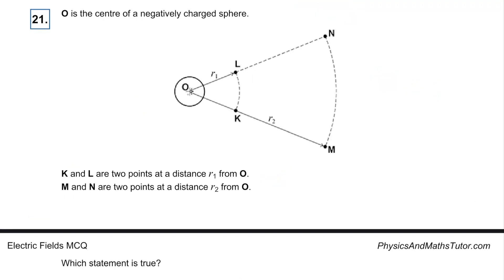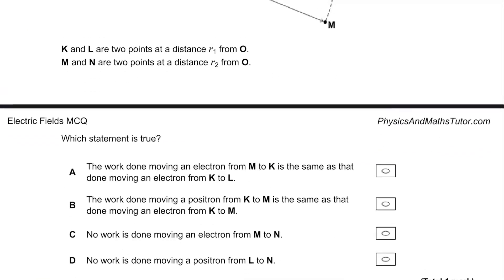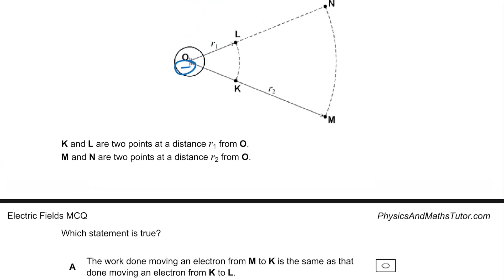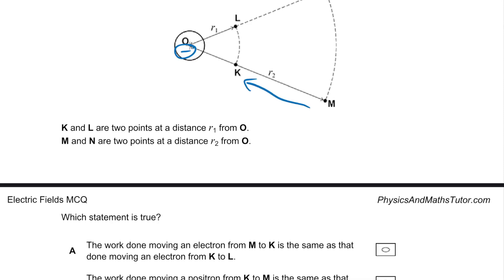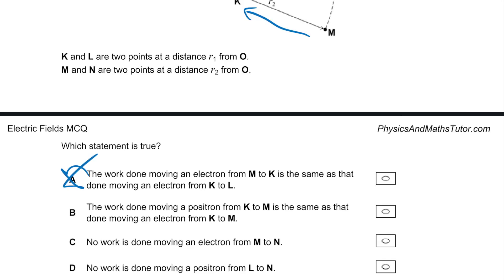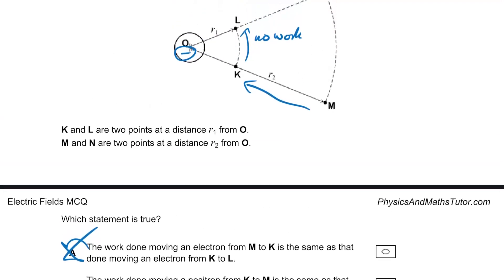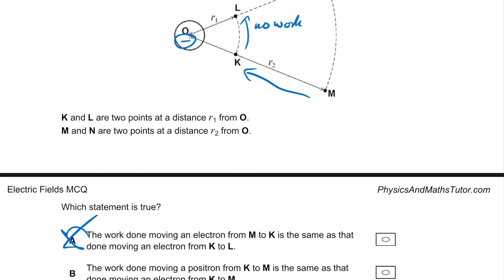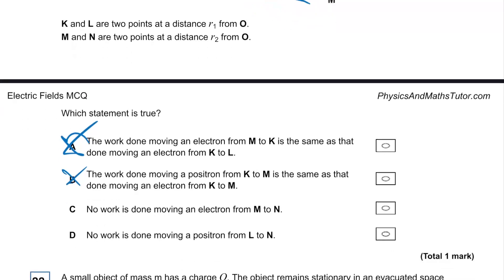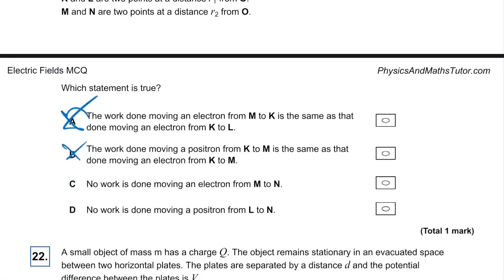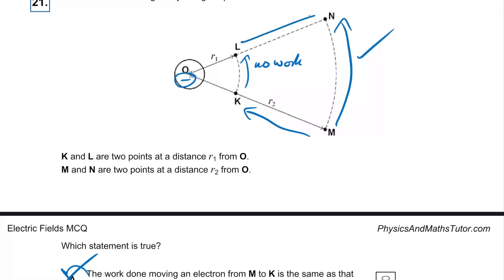Question twenty-one: O is the centre of a negatively charged sphere; K, L, M, N are points with equipotentials shown. Moving an electron from M to K is not the same as K to L — work is done along field lines. No work is done moving along an equipotential because the potential isn't changing and therefore energy can't change. Moving an electron from M to N — that's correct, it's along an equipotential. Moving from L to N does involve a change in distance, so work is done.